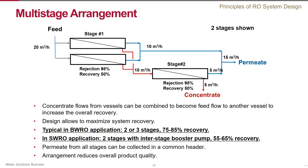Consider that each stage has a recovery of 50% and rejection of 98%, with an incoming flow of 20 cubic meters per hour. This requires two pressure vessels in the first stage. At 50% recovery, the permeate and concentrate flows after the first stage split into 10 and 10. The reject is sent to the second stage, where only one pressure vessel is needed, giving a 2-to-1 ratio. Permeate from the second stage is 5 cubic meters per hour; adding that to 10 from the first stage gives overall production of 15 cubic meters per hour, or 75% recovery.